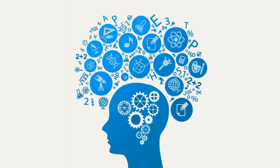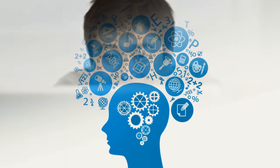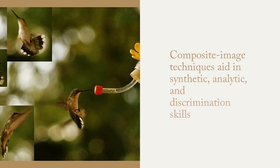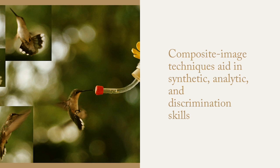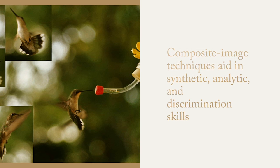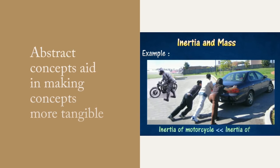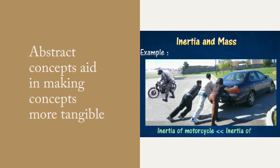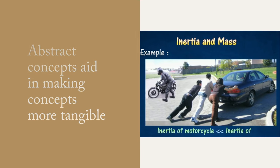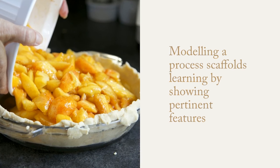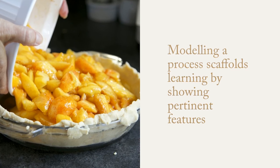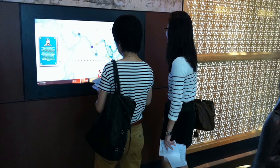The first domain assists cognition and facilitates learning. When learners appear to just be watching a video, active cognition processing can be occurring while viewing a well-designed multimedia instructional message. Videos can provide composite image techniques that aid in synthetic, analytic, and discrimination skills. Animated diagrams for explaining dynamic processes. Illustrations of abstract concepts with real-world examples, making the concept more tangible. Modeling of a process with tailored and simplified versions, which scaffolds learning by showing only the pertinent features.